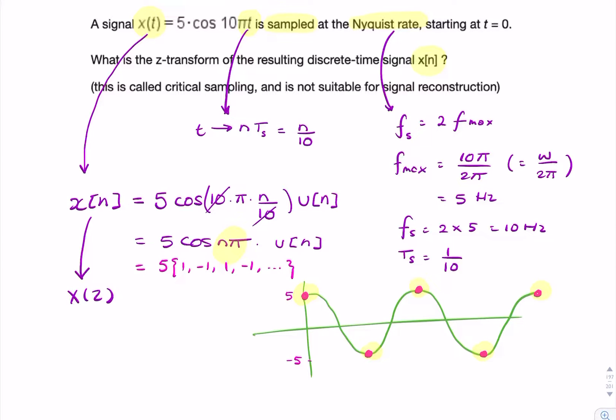Or we could write it as 5(-1)^n multiplied by u[n].